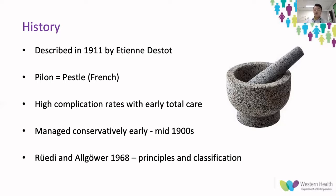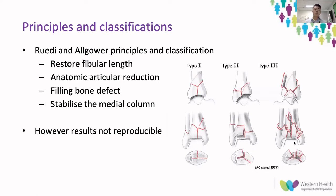It wasn't until around 1968 that Ruedi and Allgower published a series on 84 pilon fractures with fantastic results — 74 percent of patients pain-free, 90 percent returning to previous occupation, and only five percent deep infections. This caused the pendulum to swing back toward operative management. They surmised four principles: firstly, restore the fibular length; provide an anatomic articular reduction; fill in the bone defect following reduction; and finally, stabilize the medial column with a medial buttress plate.